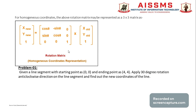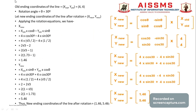We will take one example to solve the rotation matrix. Given a line segment with starting point (0, 0) and ending point (4, 4), and a rotation angle of 30 degrees in the clockwise direction, we need to find the new coordinates after rotation. The old ending coordinates are X_old = 4, Y_old = 4, and the rotation angle is 30 degrees. Applying the equation: X_new = X_old × cos(theta) − Y_old × sin(theta).